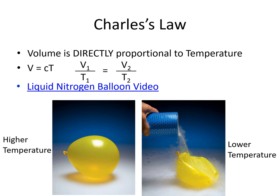There's a fun liquid nitrogen balloon video linked in the slides. Liquid nitrogen cools the balloon down. At a higher temperature — say room temperature — the balloon is fully inflated. But at a lower temperature, when we pour on the really cold liquid nitrogen, the balloon kind of compacts and crumples up because it's losing volume. At the lower temperature, its volume is decreased.